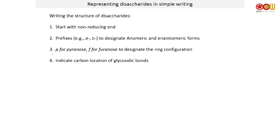To represent disaccharides in simple writing, we always start with the non-reducing end on the left. You'll have prefixes — either alpha or beta, D or L — to designate the anomeric and enantiomeric forms of your sugar monomer. Sometimes we also include little 'p' and 'f' to signify pyranose or furanose, to indicate the ring configuration.